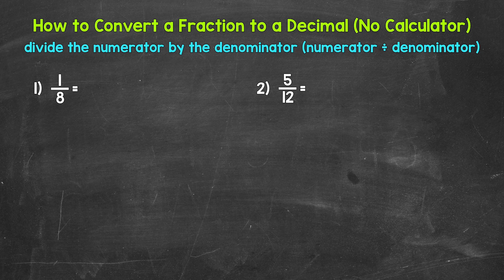Let's jump into number one, where we have 1/8. When we convert a fraction to a decimal, we can divide the numerator — the top number of the fraction — by the denominator, the bottom number of the fraction. So for number one, we need to do one divided by eight. Let's set this up: one divided by eight.